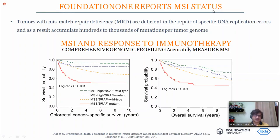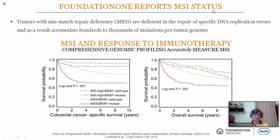In colorectal cancer, the overall survival graph is similar — MSI with coexisting mutations like BRAF reduces responses. On 30th November 2017, FDA approved Foundation Medicine as a companion diagnostic test.